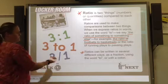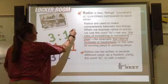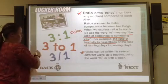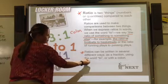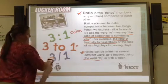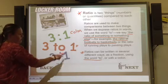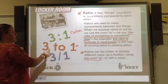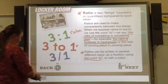Here are the examples. You can write it with a colon — record that example. Three to one uses the word 'to.' And three over one uses a fraction. But they all represent the same ratio: three balls to one other item.